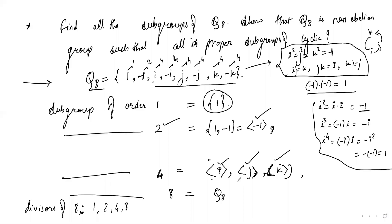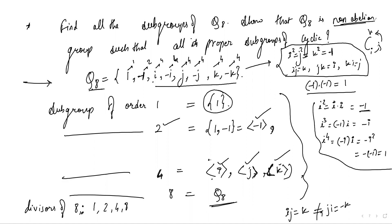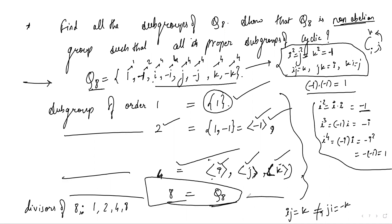We now have the list of all subgroups of Q8. Q8 is non-abelian because ij = k but ji = -k, so these two are not equal. However, all proper subgroups are cyclic: the subgroup of order 1 is cyclic, the subgroup of order 2 is cyclic, and the subgroups of order 4 are cyclic, but Q8 itself is non-abelian.